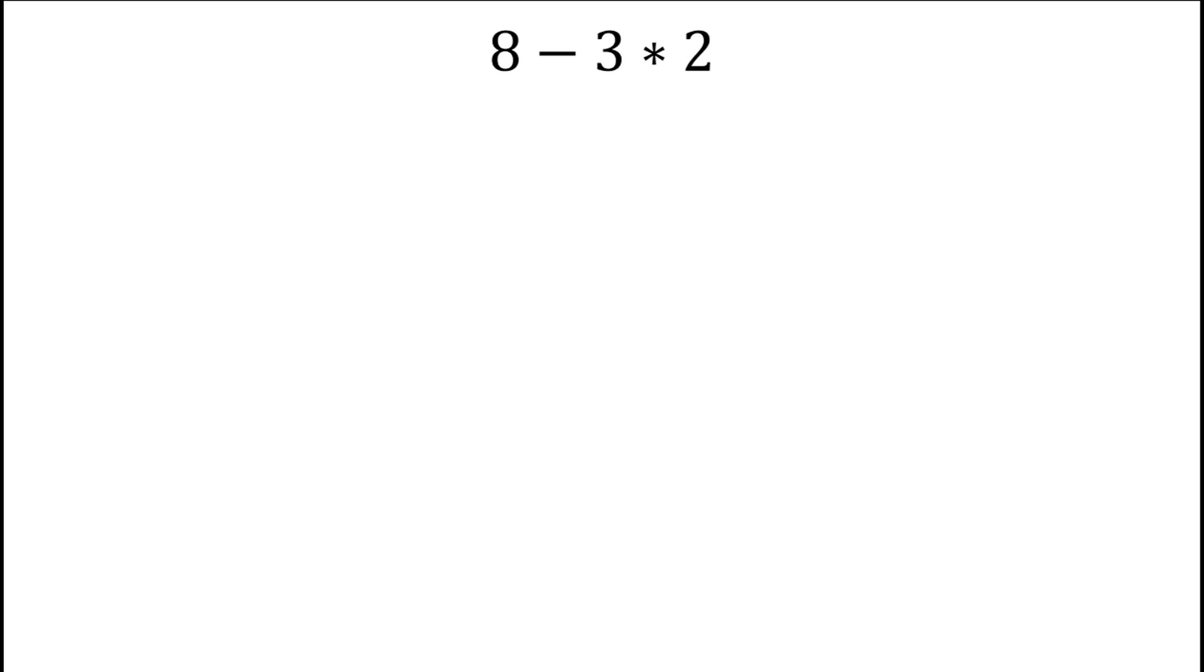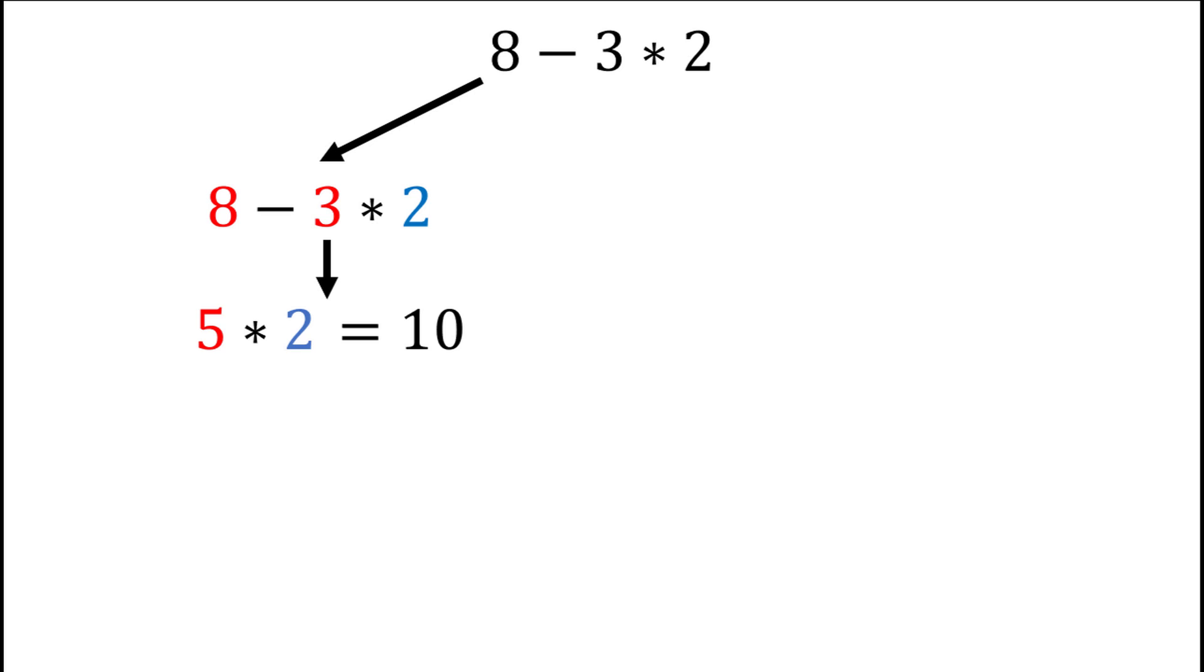Now, there are two interpretations for how you might go about solving this. One way could be to first subtract 3 from 8 so that you have 5 and then multiply by 2 to get 10. We subtracted 3 from 8 first and then multiplied by 2. Our order of operations was subtraction and then multiplication.